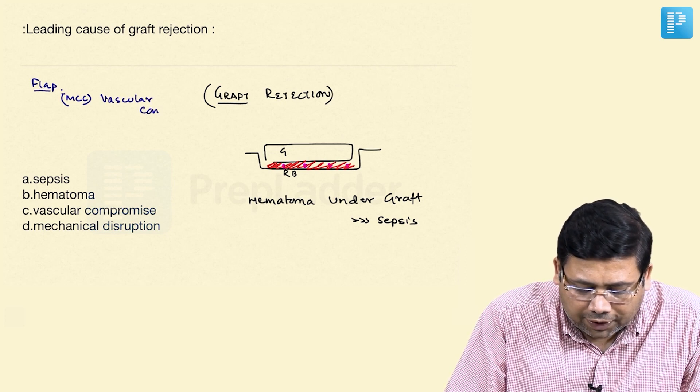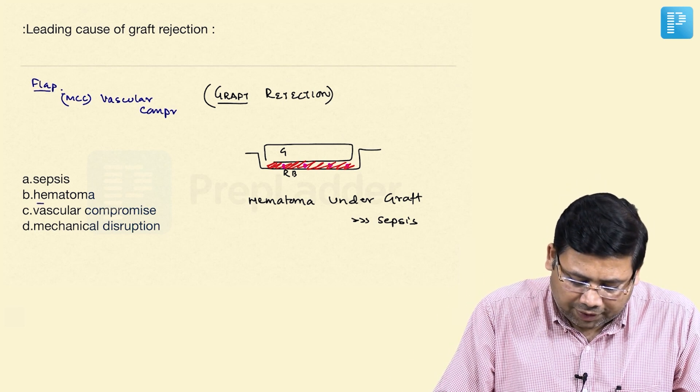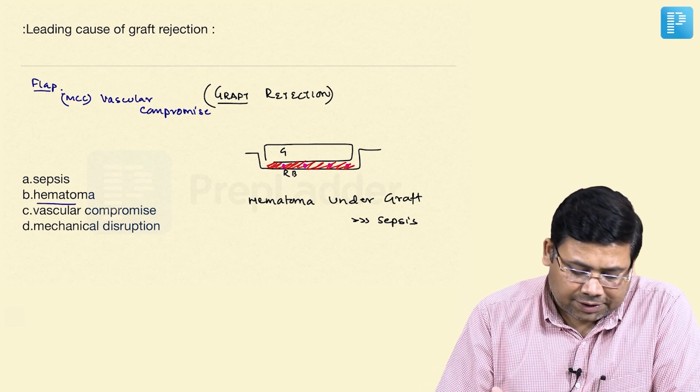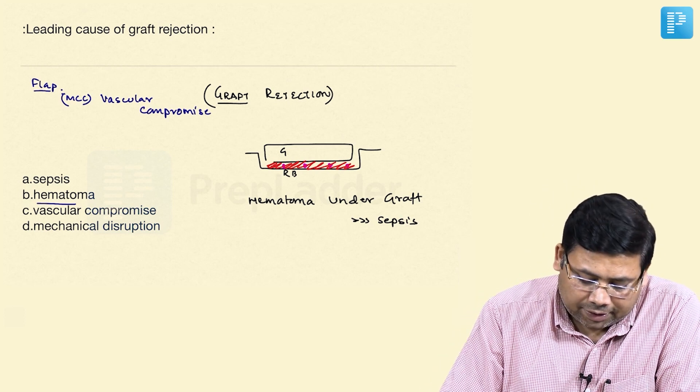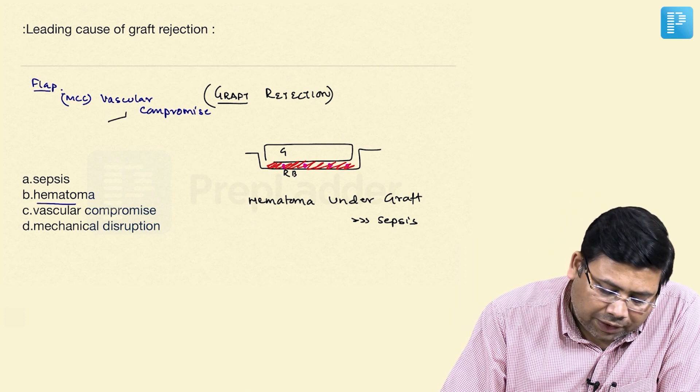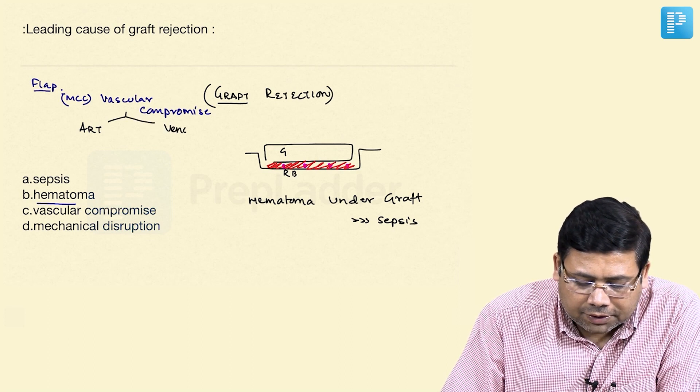When we talk about vascular compromise, for graft it is the hematoma, but when we talk about the flap, the other options are: one is mechanical disruption, one is sepsis, one is vascular compromise. Vascular compromise can be arterial and it can be venous.